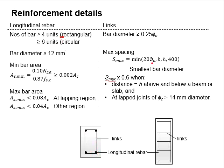As for circular columns, six units of longitudinal bar is required. The bar diameter should be at least 12mm.